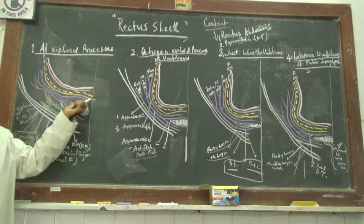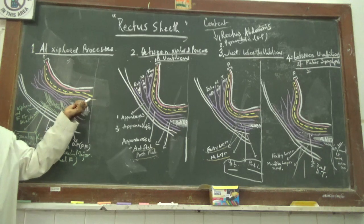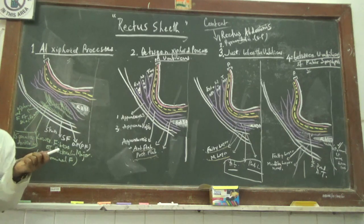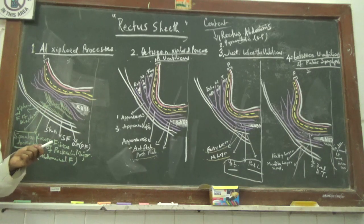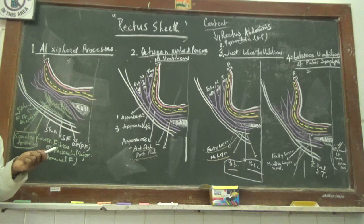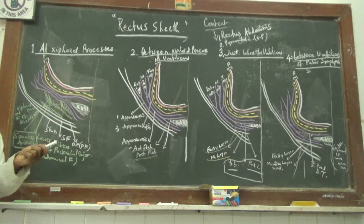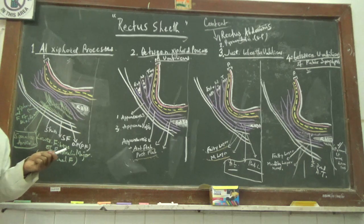As the transversalis fascia runs laterally and forwards, it becomes the transversalis fascia proper. As it descends toward the inguinal ligament, it meets the transversalis fascia coming from the front and lateral area. At the level of the inguinal ligament it leaves the abdominal cavity and continues into the lower limb, becoming the femoral sheath — described as the fascial lining of the abdominal cavity reflected at the level of the femoral triangle.